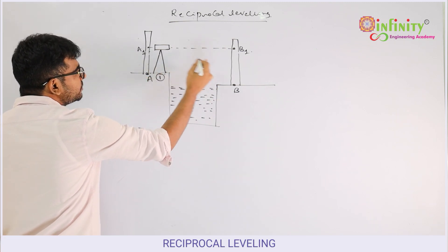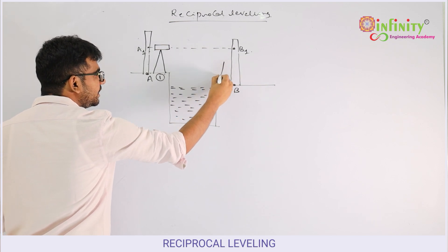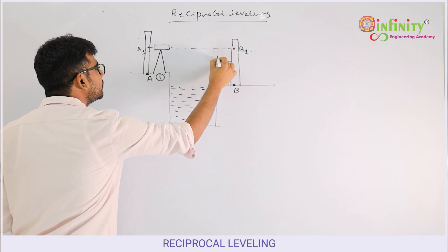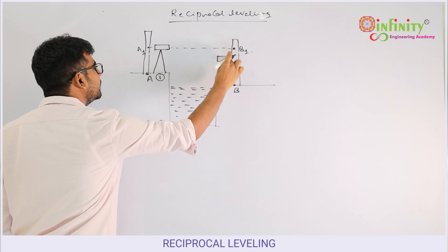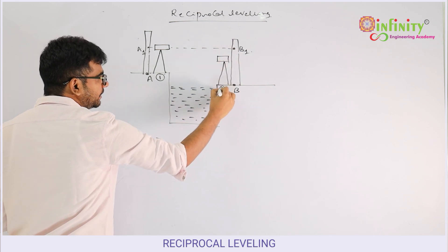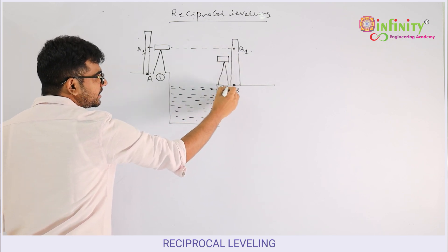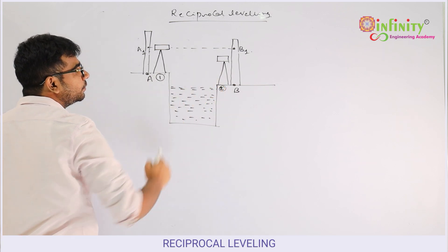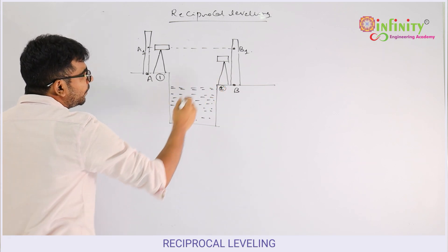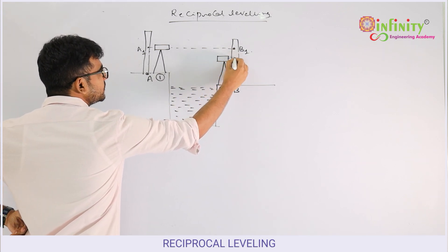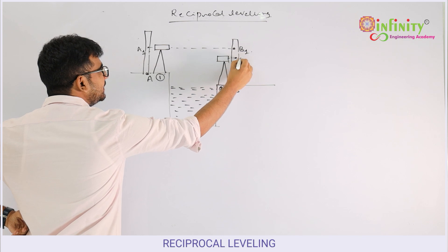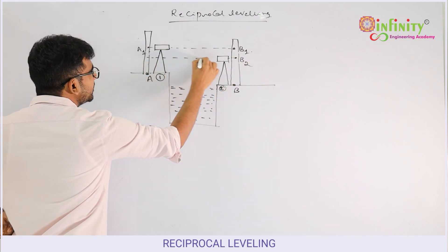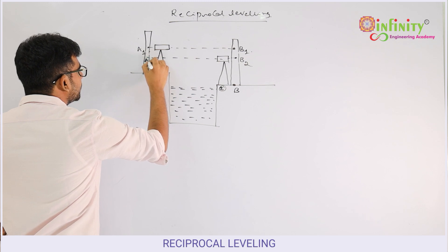Then we shift the instrument to a position nearer to station B, which is called instrument position 2. From this position, the staff reading taken on station B is called B2 and the staff reading taken on station A is called A2.